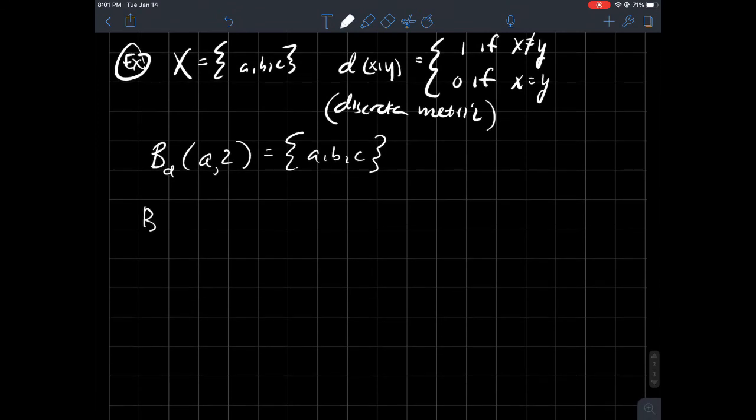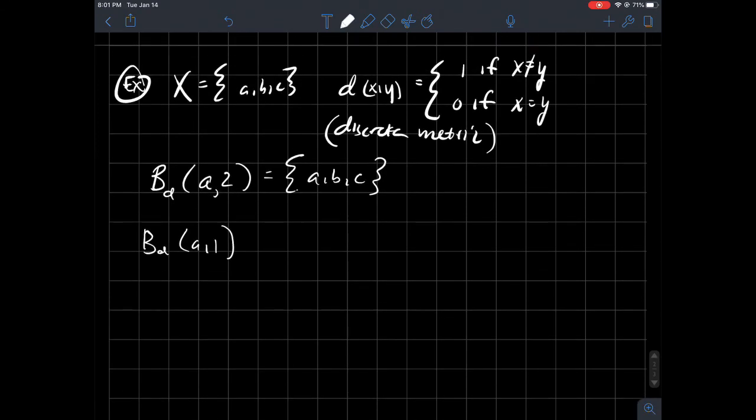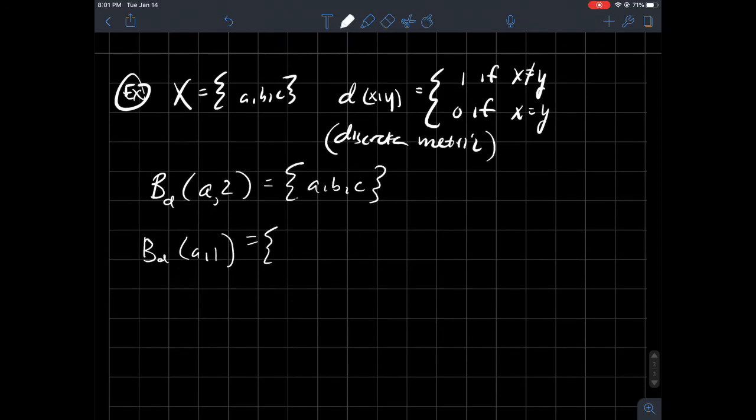On the other hand, something like B_d(a,1), remember, this is just to emphasize, too, this ball, right, I want to know what are the points whose distance from a is strictly less than 1. Well, in that case, b and c are exactly 1 unit away from a according to this measurement. And so, in that case, only a is a distance less than 1 away from a. So, in this case, it's just a itself.